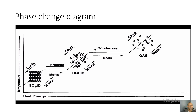If you look at the following diagram, we're going to be looking at the relationship between two things: temperature and heat energy. As temperature increases, heat energy increases as well, and this is what we call a direct relationship. So let's go ahead and start at this point on our phase change diagram.